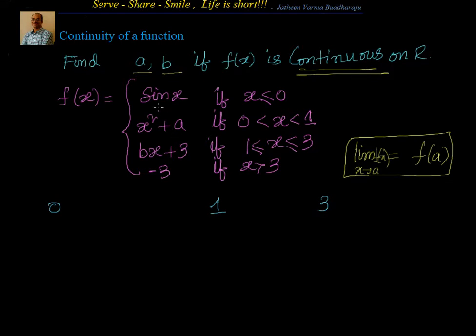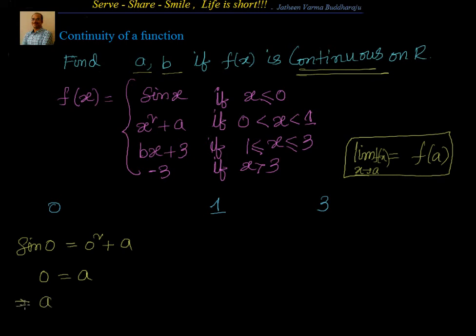First, let's go to x equal to 0. f of x equals sin x if x is less than or equal to 0, and f of x equals x square plus a if 0 is less than x less than 1. Taking the left-hand limit, it equals sin 0 equals 0, which is f of 0. The right-hand limit at 0 is 0 square plus a equals a. For continuity, 0 equals a, so a equal to 0.